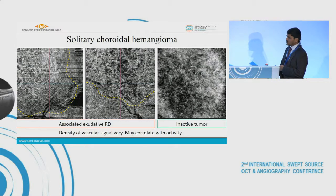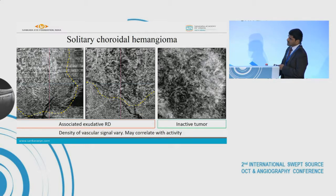On OCTA we can see that the intervening dark signals were quite numerous in the case with the inactive tumor, but in the active tumor the intervening signal void areas were very few.